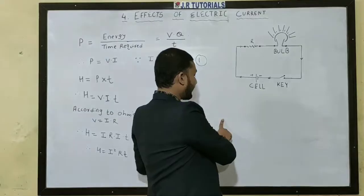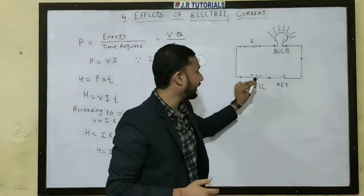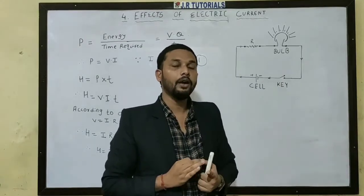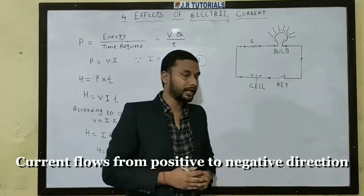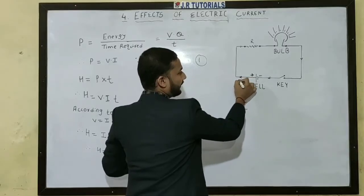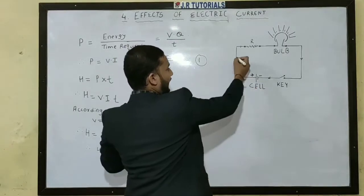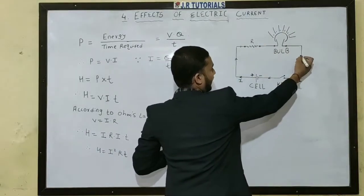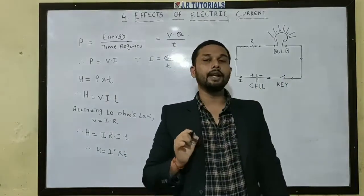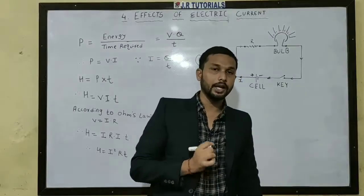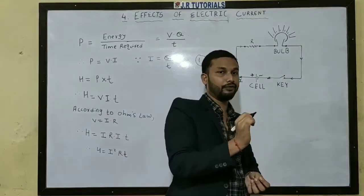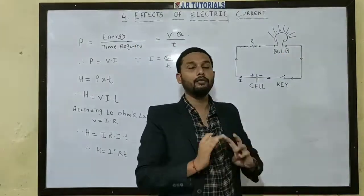If we talk about current, we should always remember one thing. The current flows from the positive terminal to the negative terminal. Here we have the positive terminal — this is where the current flow, represented by I, starts. The current travels through the circuit and returns to the negative terminal. This is how the circuit is completed and current flows.